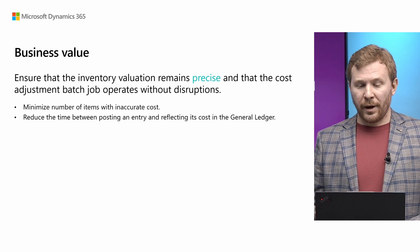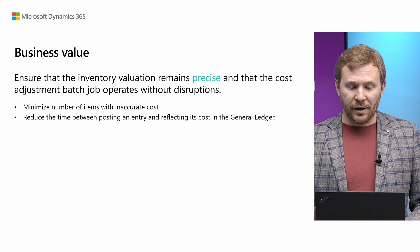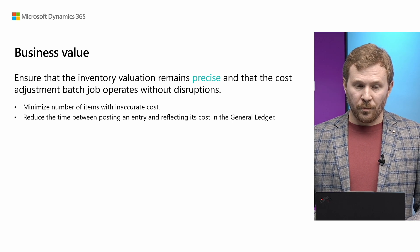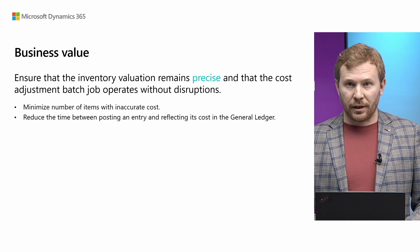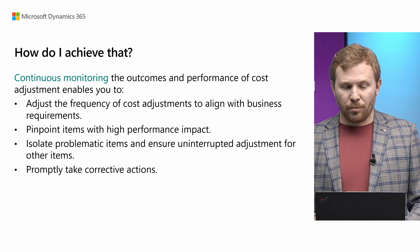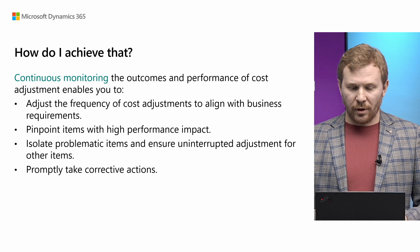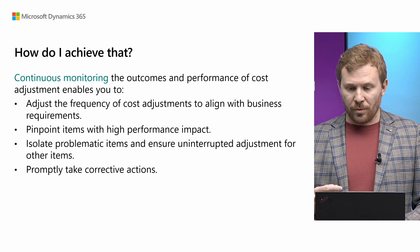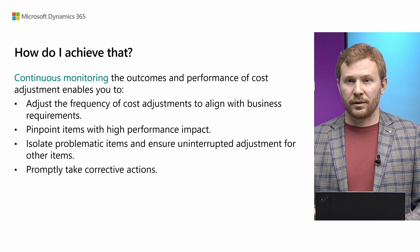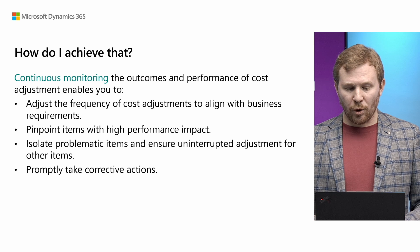Let's step back and see why we believe that continuous monitoring of cost adjustment and quick reactions to issues is important for business. We are trying to achieve two main goals. First, we want to minimize or even eliminate items with inaccurate cost. Second, we are reducing the time between posting an entry and reflecting its cost in the general ledger. Having cost adjustment logged allows us to properly set the frequency of cost adjustment, locate items that fail or have high performance impact, isolate them, ensure all other items keep being adjusted, and promptly take corrective actions.